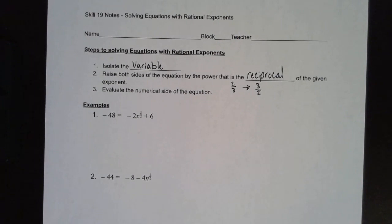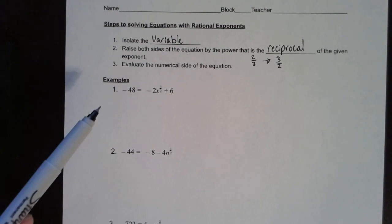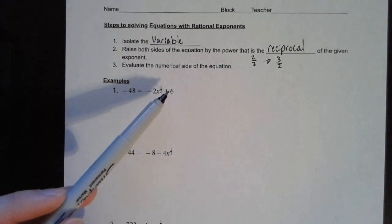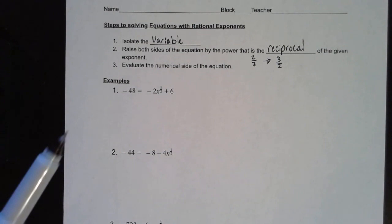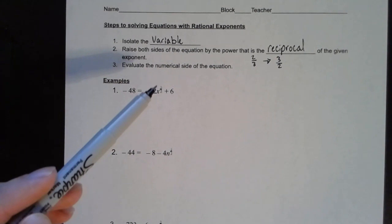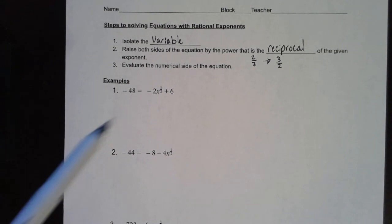We'll end up with some number raised to a rational exponent on one side, and we just need to evaluate what that is like we did in the last lesson. So let's take a look at the first example: negative 48 equals negative 2x to the 3 over 2 power. First we need to isolate the variable — we just want this x to the 3 halves on one side of the equation. So we're going to need to subtract 6 on both sides and then divide by negative 2.